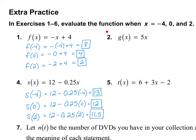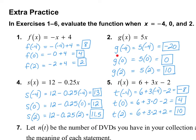I would like for you to go ahead and try number 2 and number 5 on your own. Pause the video and turn it back on when you're done. For number 2: G of negative 4 is equal to negative 20; G of 0 is equal to 0; and G of 2 is equal to 10. For number 5: T of negative 4 is equal to negative 8; T of 0 is equal to 4; and T of 2 is equal to 10. If you made any mistakes, see if you can find your mistake before we move on.